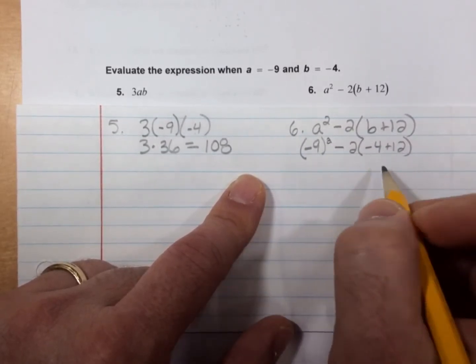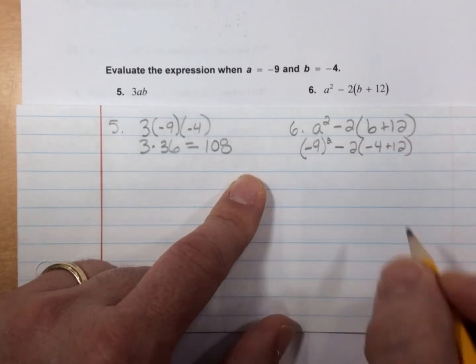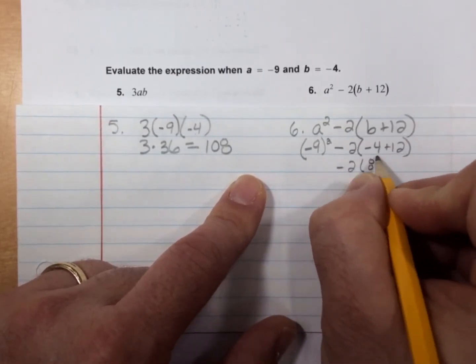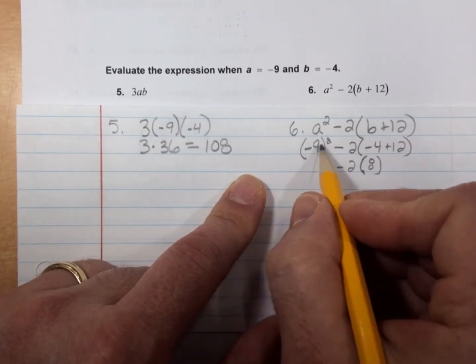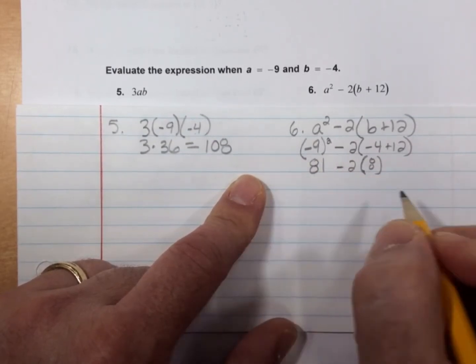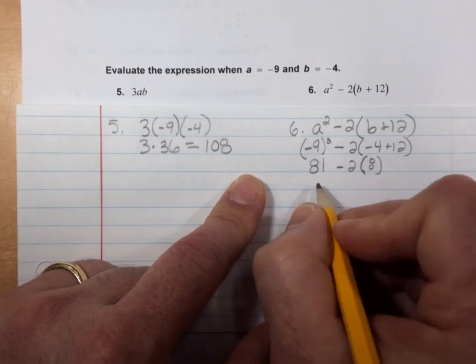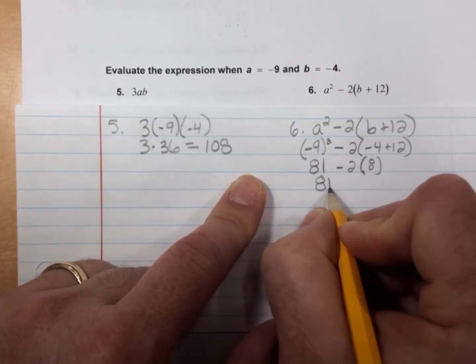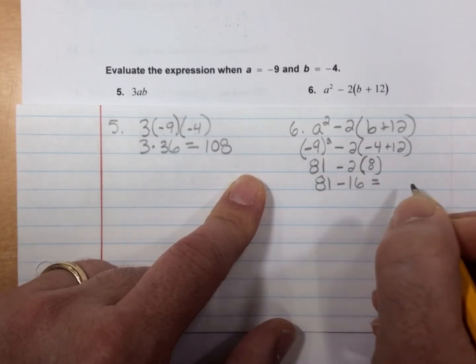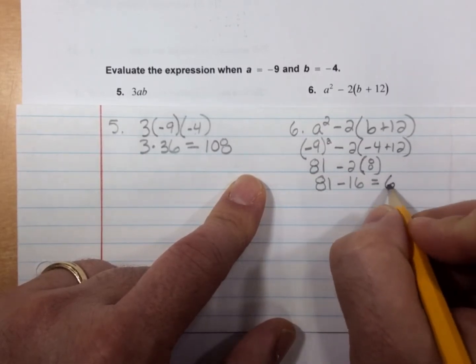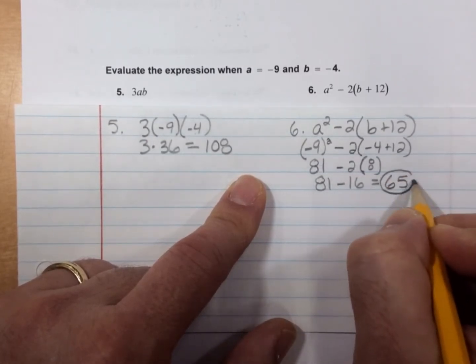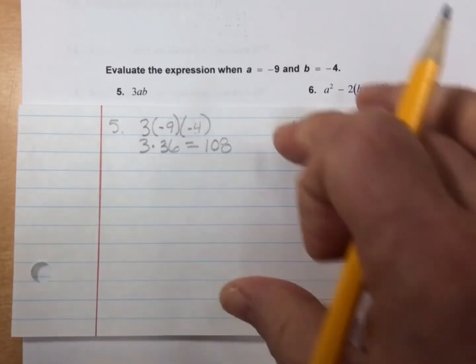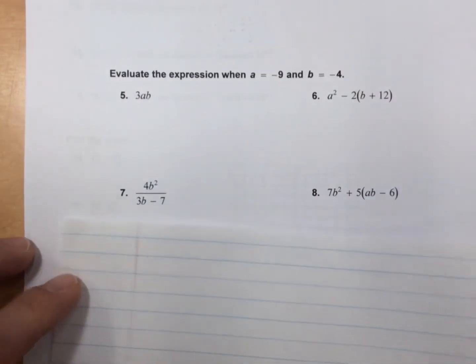Well, we'll do parentheses first. -4 and 12 is 8. So now I have -2 times 8. And I can do this too. -9 times -9 is 81. Well, 2 times 8 is 16. So now I have 81 minus 16, which is 65.